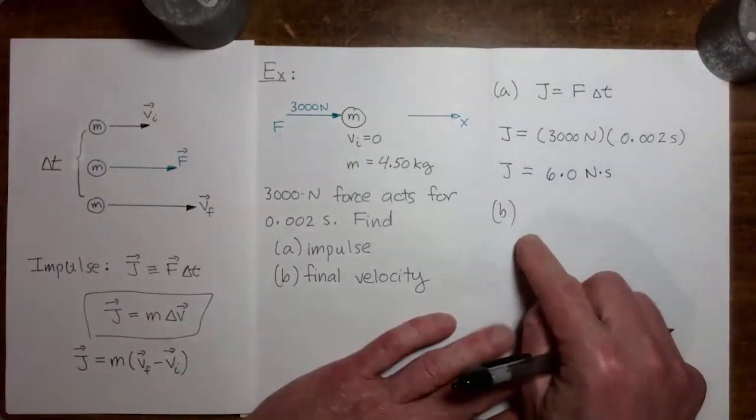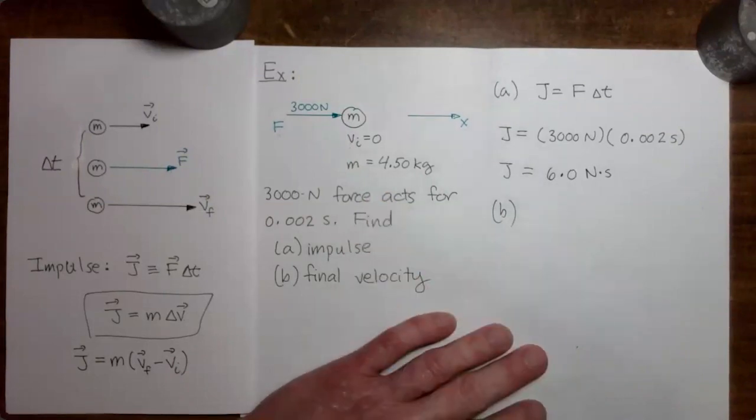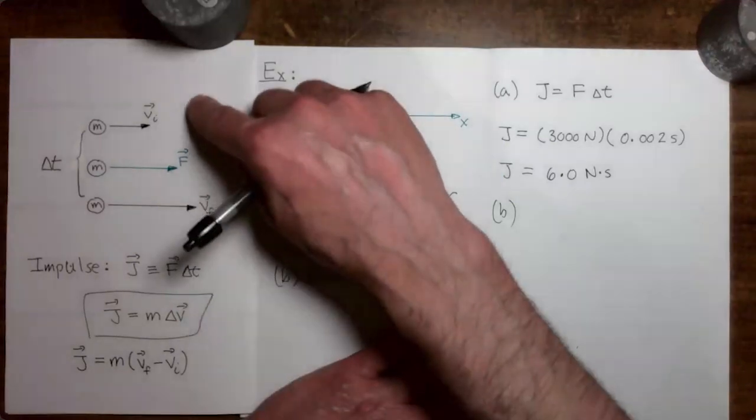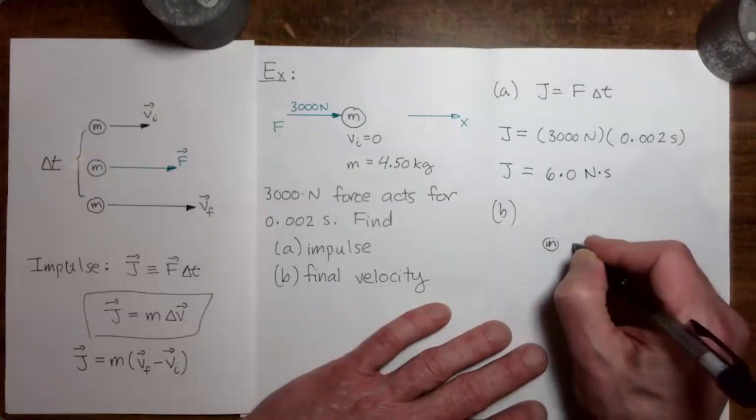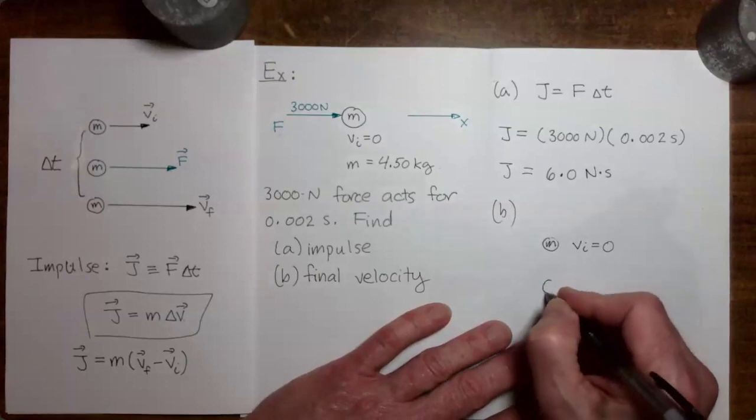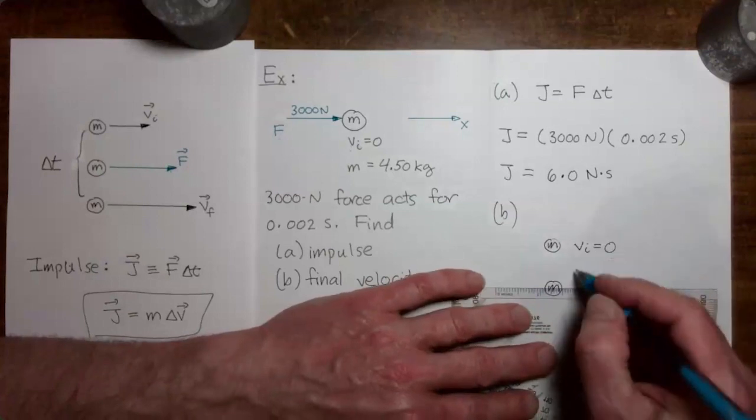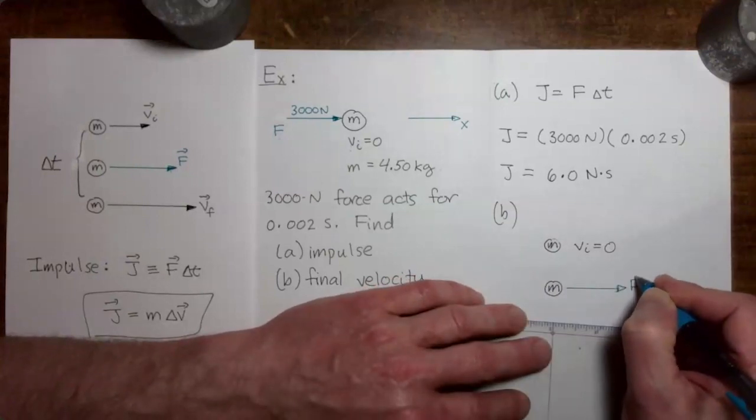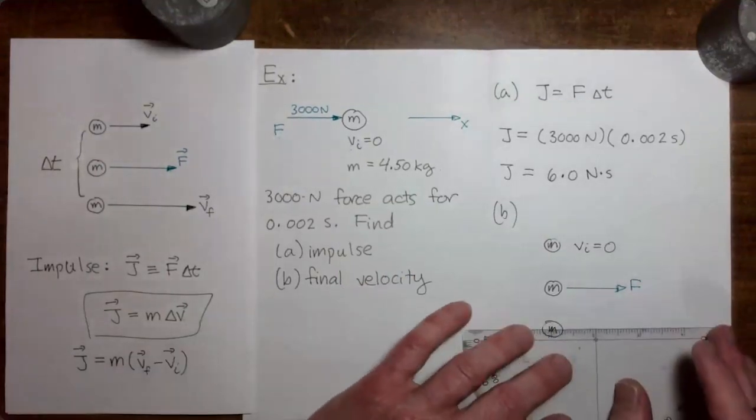In part b of the problem we want to find the final velocity of the mass after the force has acted. So let's sketch this out and we're going to end up with a sketch which looks a whole lot like the one over here. So we have our mass starting out with an initial velocity of zero. Then we have our force coming in to act on the mass. Then after the force has acted the mass has a final velocity.